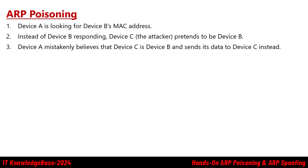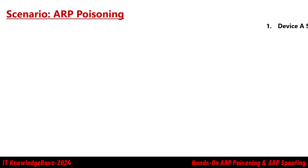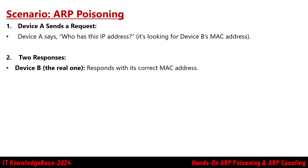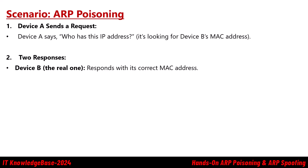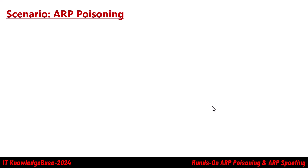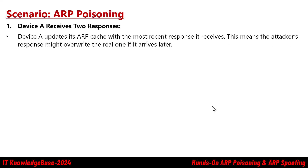You might ask: what happens to Device B's real response? When both Device B (the real one) and Device C (the attacker) respond to Device A's ARP request, Device B responds with its correct MAC address, and Device C also responds pretending to be Device B, giving its own MAC address.